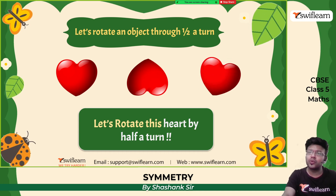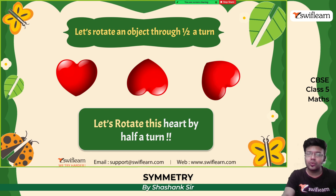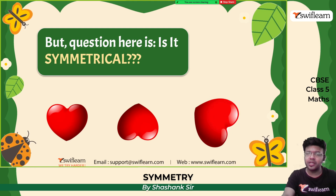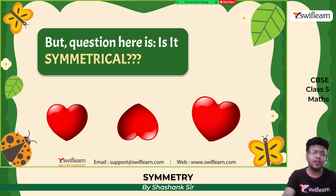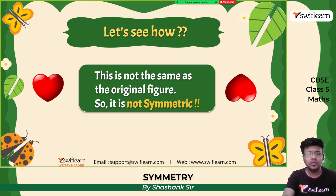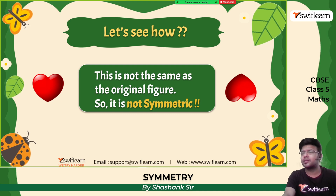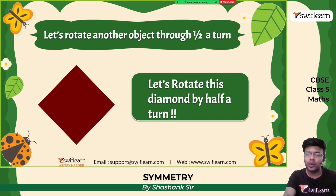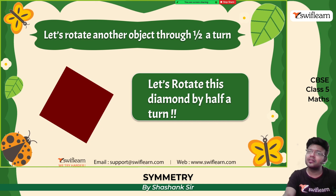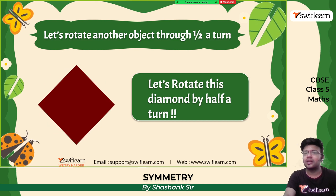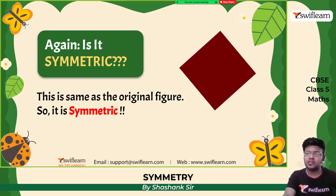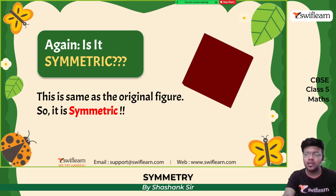Let us rotate an object through a half turn. The question here is: is it symmetrical? If we are rotating this, does it look symmetric? This is not the same as the original figure — even by rotating it 180 degrees, it is not symmetric. Now let us rotate the square again. When rotated by a half turn or 90 degrees, it looks like a diamond. But on a full turn, it looks symmetric — it is the same as the original figure, so it is symmetric.